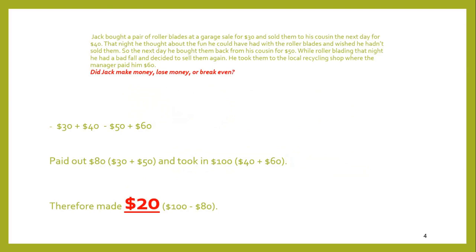He actually made $20. How did we work that out? Let's look at how much money he paid out. He paid out $30 originally and then $50 to buy them back — so he paid out $80. He took in $100: he sold them to his cousin for $40 and then to the recycling shop for $60. So we're looking at a difference between $100 that he took in and $80 that he paid out, which gives us a profit of $20.